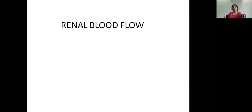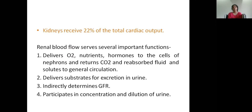Hello everyone, today we shall discuss renal blood flow. Kidneys receive 22% of the total cardiac output. Normally cardiac output is 5 liters per minute, and 22% of it is received by the kidneys. Renal blood flow serves very important functions like delivering oxygen, nutrients, and hormones, mainly delivering substrates for excretion in the urine. It also indirectly determines the GFR and participates in the concentration and dilution of urine.